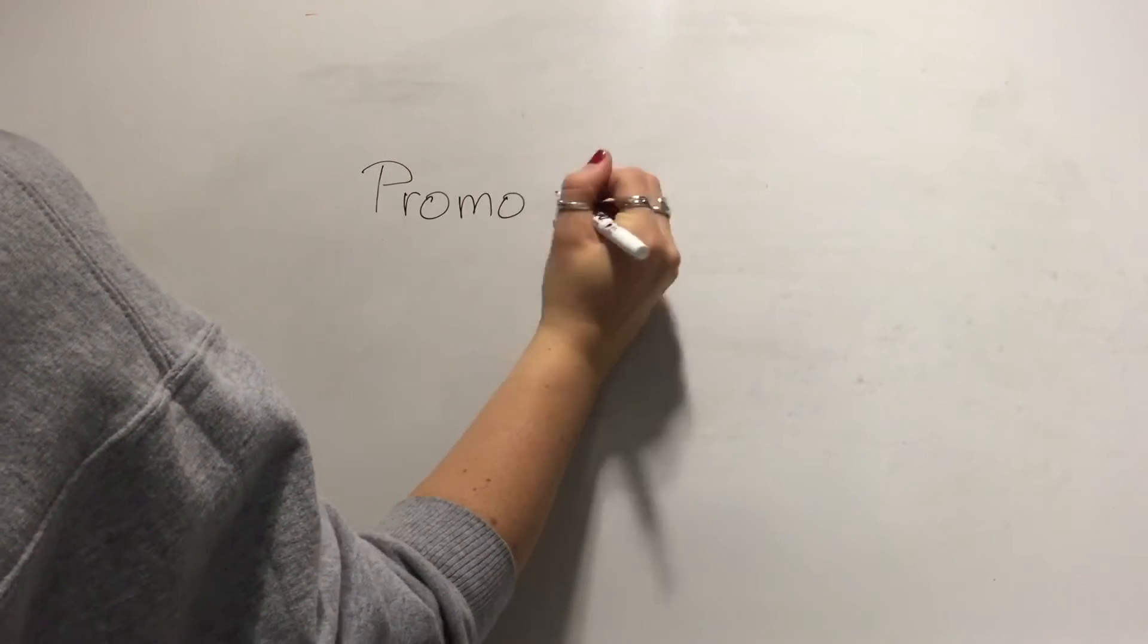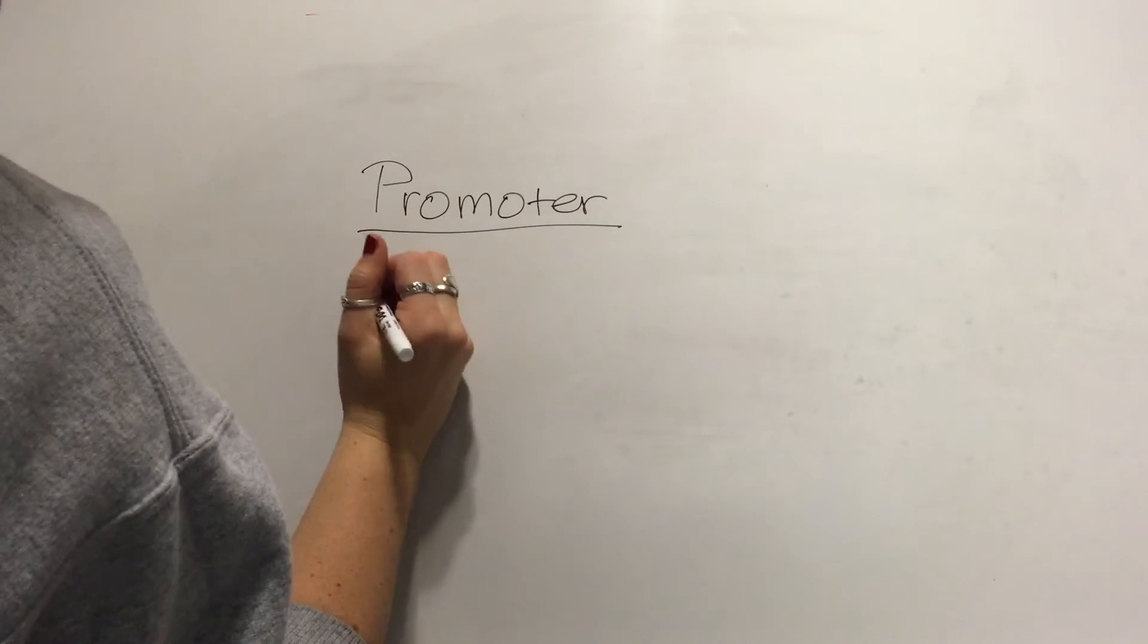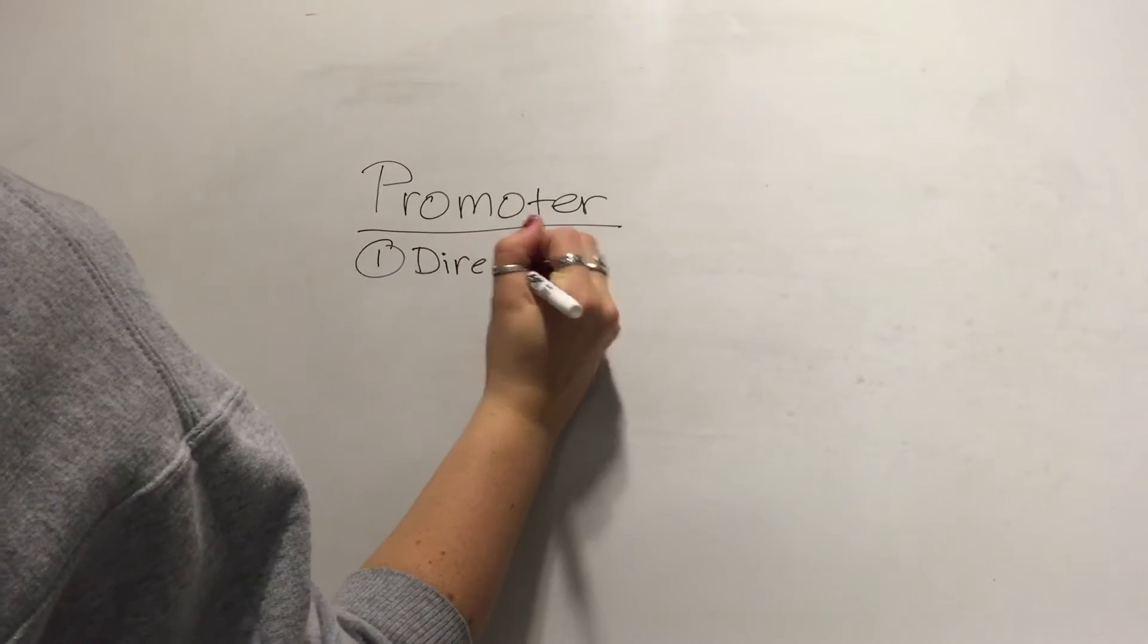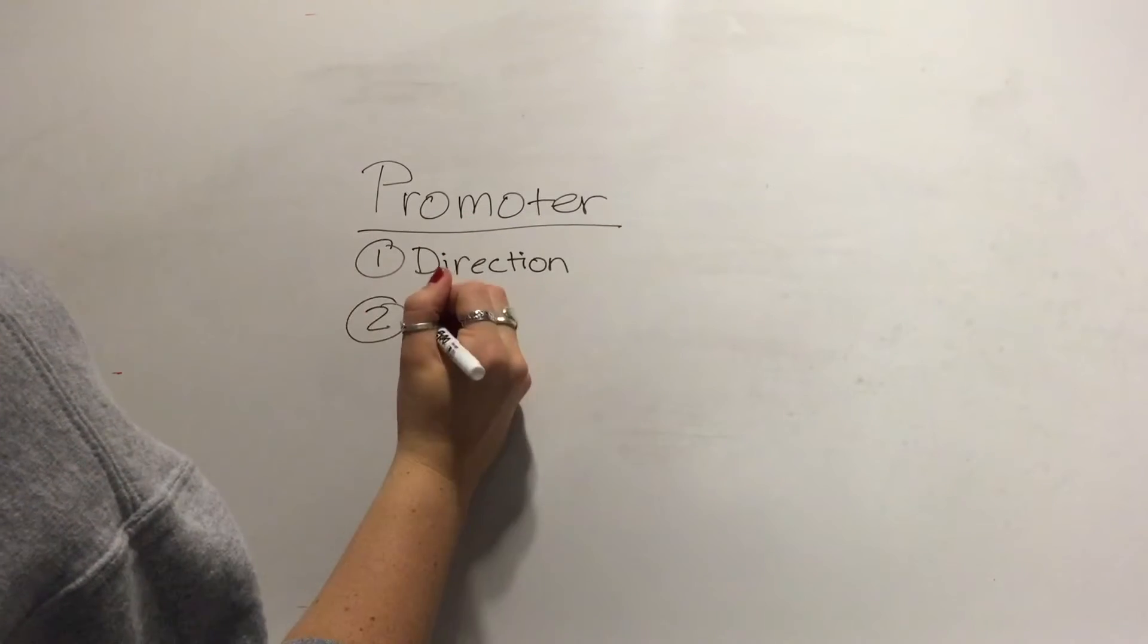The promoter is the first region of a transcription unit in gene expression. It has three main functions. First, it indicates the direction of transcription.